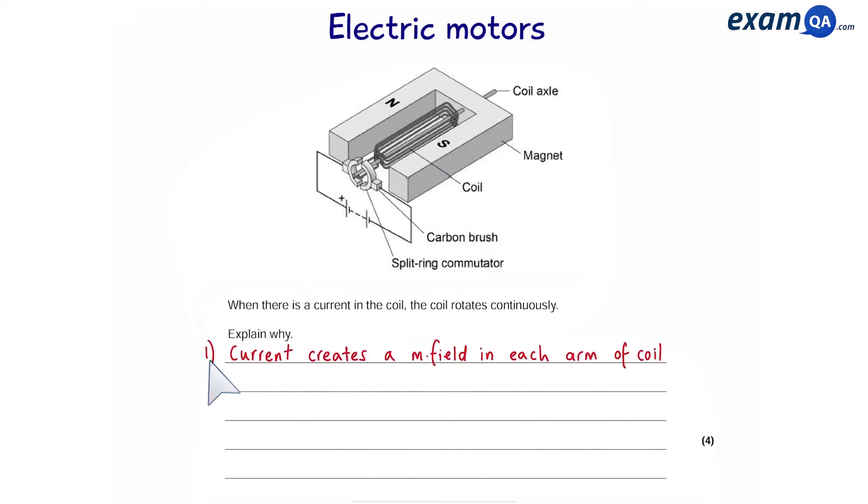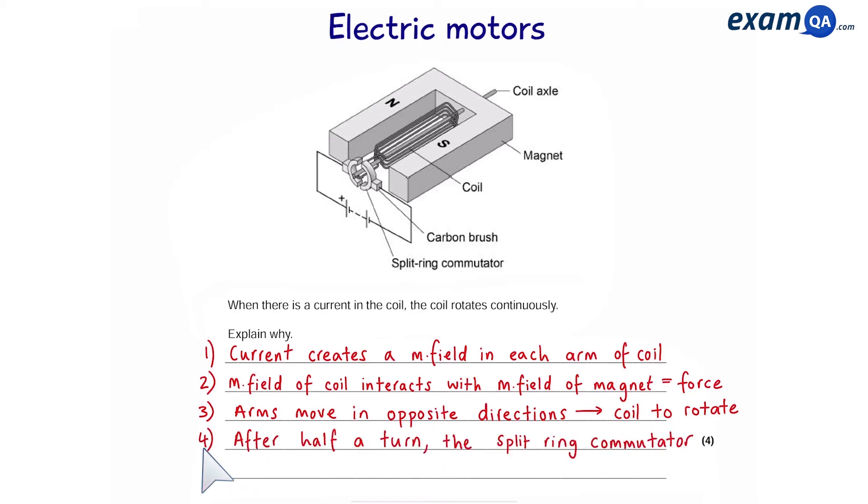The current creates a magnetic field in each arm of the coil. The magnetic field of the coil interacts with the magnetic field of the magnet. This creates a force on the coil. The arms in the coil move in opposite directions, causing the coil to rotate. After half a turn, the split ring commutator swaps the contacts to keep the coil rotating in the same direction.